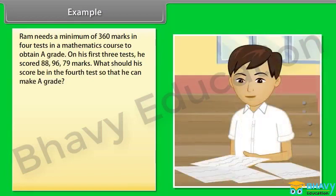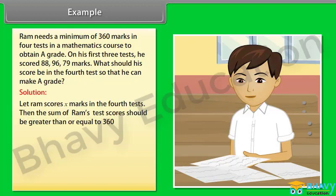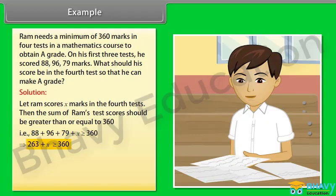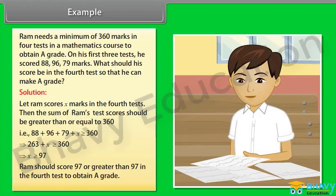Example: Ram needs a minimum of 360 marks in 4 tests in a mathematics course to obtain A grade. On his first 3 tests, he scored 88, 96, and 79 marks. What should his score be in the 4th test so that he can make A grade? Solution: Let Ram score x marks in the 4th test. Then the sum of Ram's test scores should be greater than or equal to 360. That is, 88 plus 96 plus 79 plus x greater than or equal to 360, which implies 263 plus x greater than or equal to 360, which implies x greater than or equal to 97. Ram should score 97 or greater than 97 in the 4th test to obtain A grade.